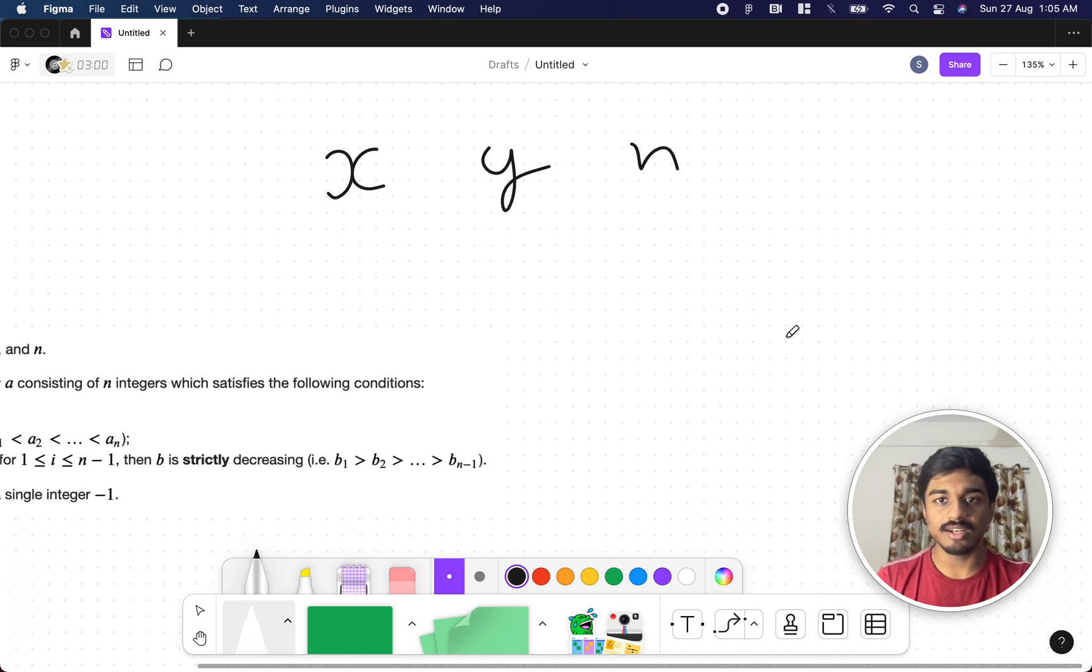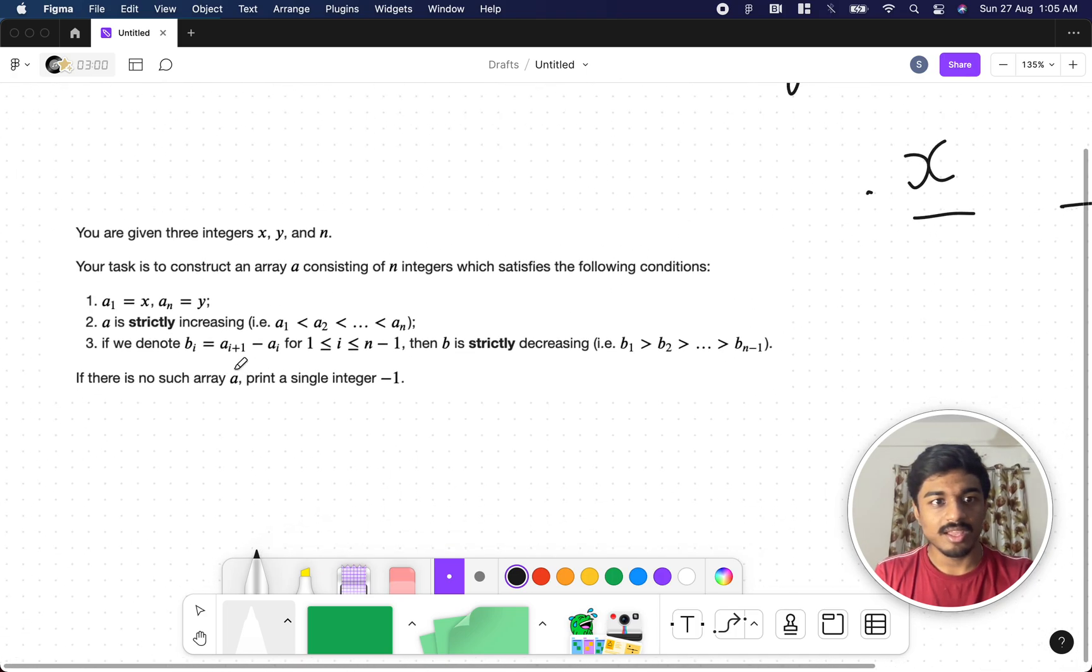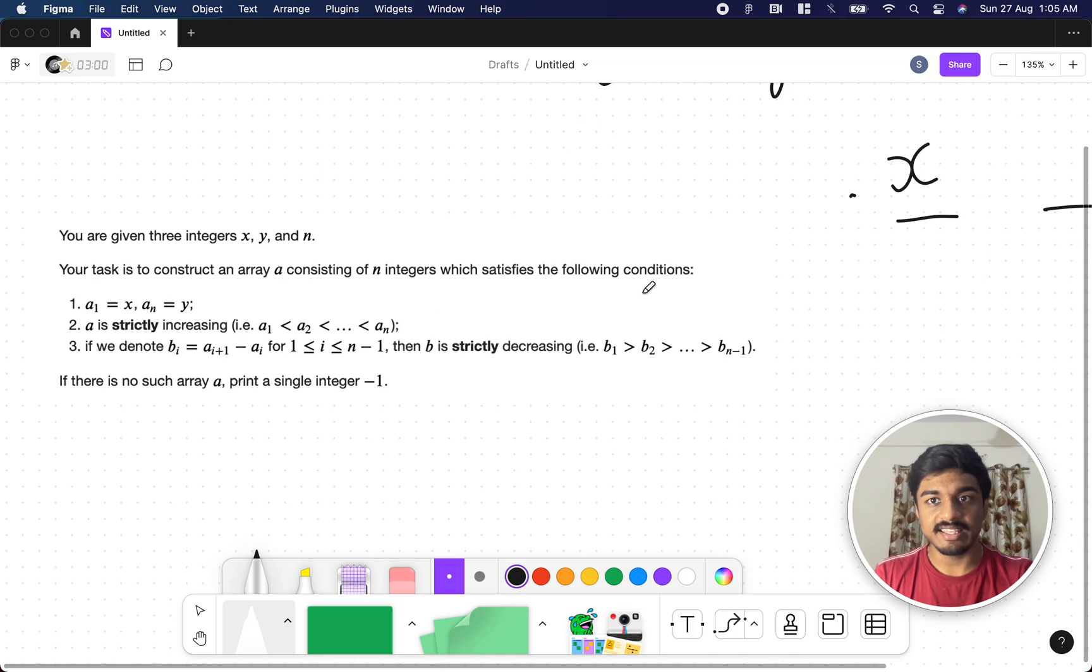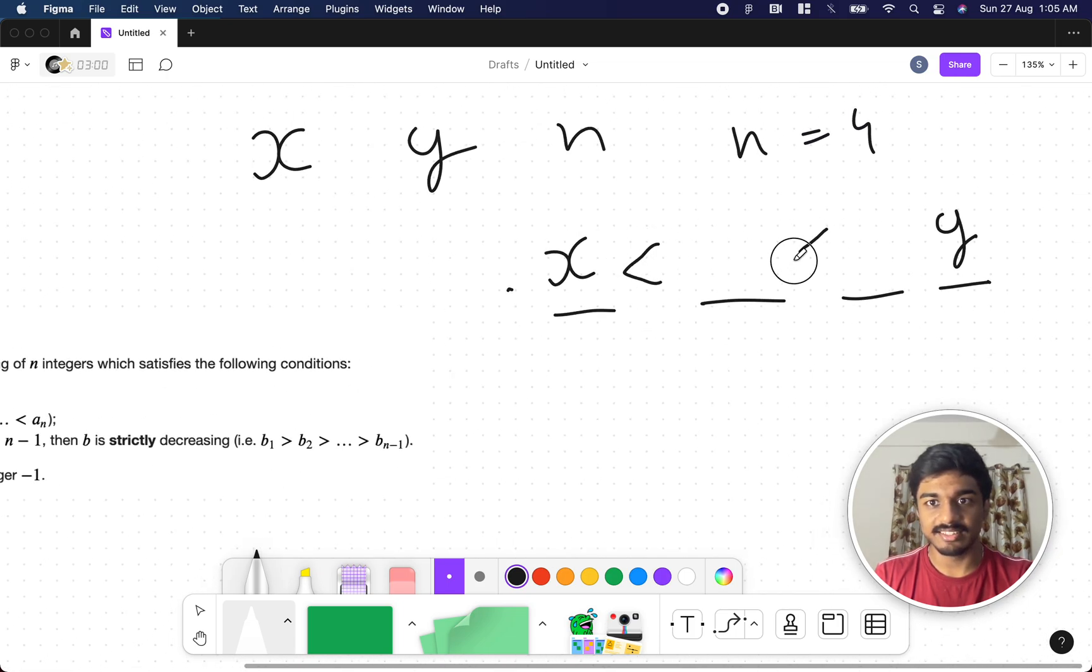So they are telling that if you have n elements, let's say n is 4, 1 2 3 4, they will give you x and y. You can fix x and y here and a is strictly increasing: x less than this less than this less than y. That's all.